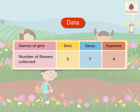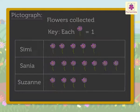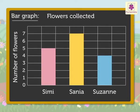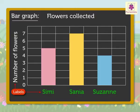Now, let's look at the data chart of the flowers collected. We have already represented this data using a pictograph. Now, another way of representing this data is through a bar graph. Every bar graph has: 1. A title which tells us what the bar graph is about. 2. Both the side and the bottom of the graph have a label which tell us what kind of data is shown.